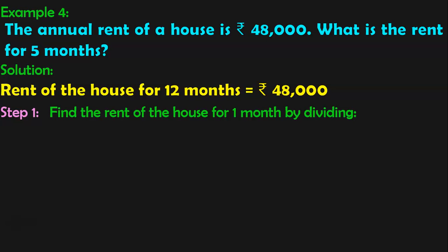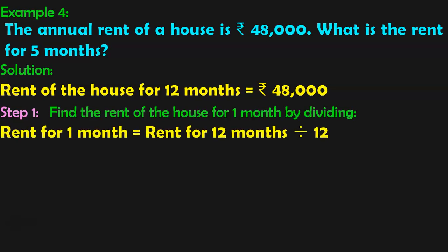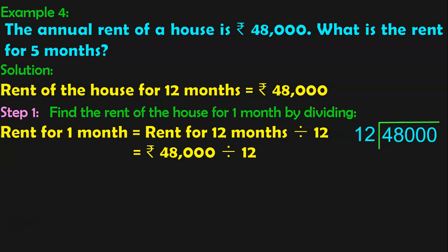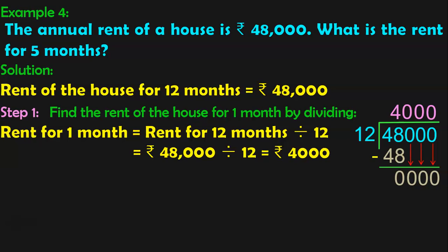Step 1: Find the rent of the house for 1 month by dividing. Rent for 1 month is equal to rent for 12 months divided by 12, which is Rs. 48,000 divided by 12. 48,000 divided by 12 equals 4,000. So, the rent for 1 month is Rs. 4,000. The question is to find the rent for 5 months.